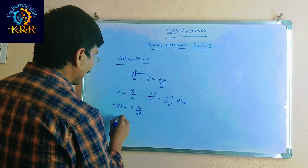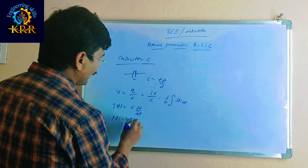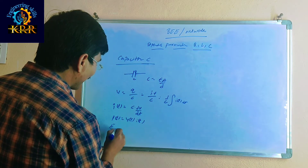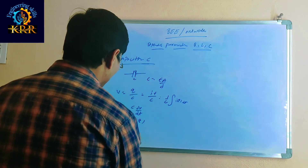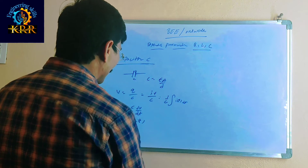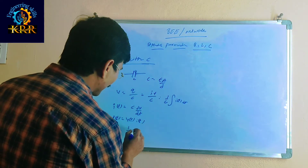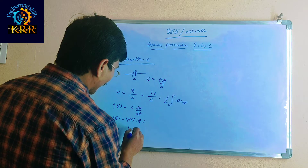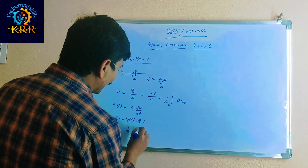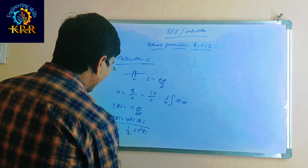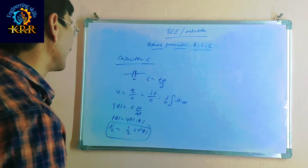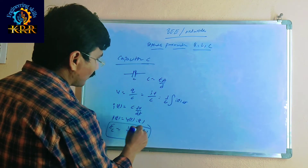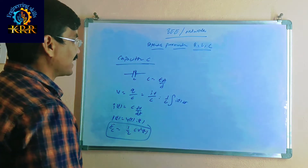How to calculate the power in a capacitor? Power is V(t) into I(t). How to calculate the capacitor energy? Energy equals one-half capacitance into V squared of t — that is, 1/2 · C · V²(t). With the help of this formula, we can calculate the energy in capacitors. These are the basic details of the resistor, inductor, and capacitor.